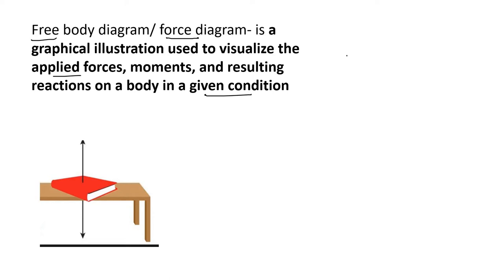Since it is in a resting state, what kind of forces are acting on it? There will be two kinds of forces. Suppose if I want to make a free body diagram for this, you make a separate diagram. In this system there are two bodies — one is the book and one is the table.